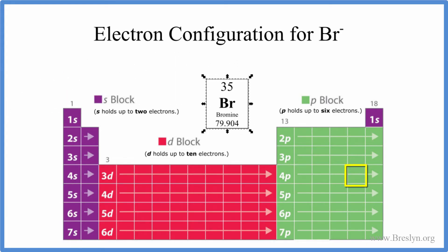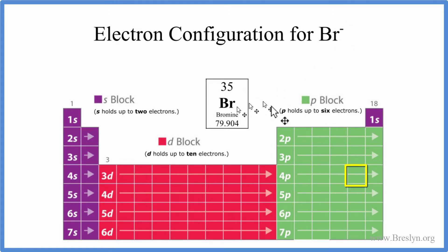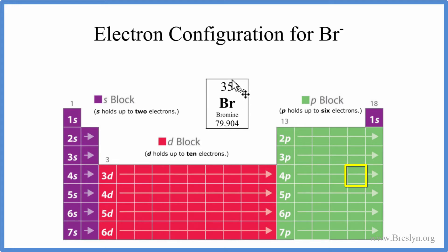Neutral bromine — when we say it's neutral, that means it doesn't have a plus or a minus charge. It means the protons equal the electrons. So the atomic number for bromine is the number of protons, and because it's neutral, it's also the number of electrons. So we have 35 electrons that we'll use to write the electron configuration for bromine.